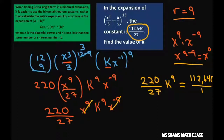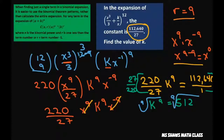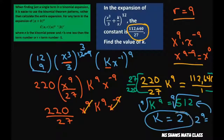Solving for k, multiply both sides by 27 divided by 220, and we get k to the 9th power equals 512. Taking the 9th root of both sides, k equals 2. That's because 2 to the 9th equals 512. So that's our final answer.